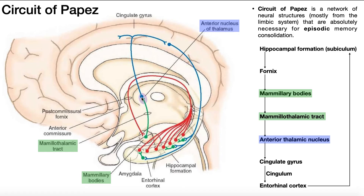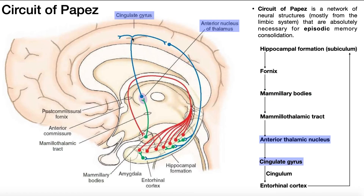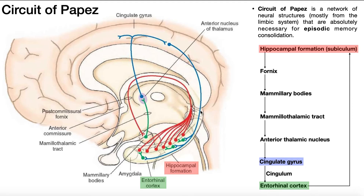These cell bodies within the anterior nucleus of the thalamus have axons that project further superiorly into the cingulate gyrus, also called the cingulate cortex. Those axons then synapse with another set of neurons also in the cingulate gyrus. This tract is the cingulum, and the cingulum loops back around to these neurons which are part of the entorhinal cortex. The entorhinal cortex neurons then synapse back with the red cell bodies that constitute the hippocampal formation.